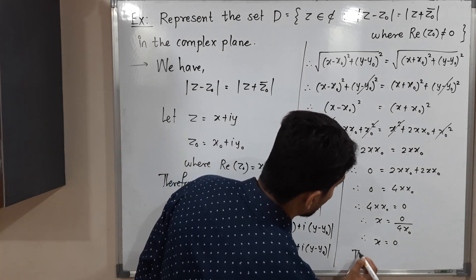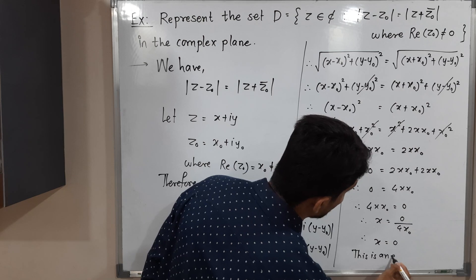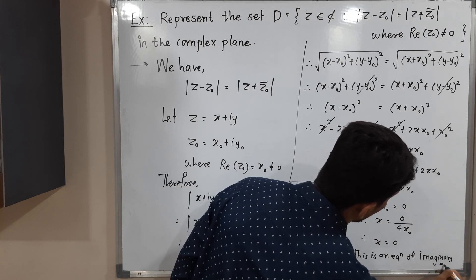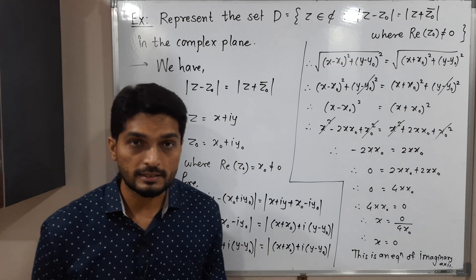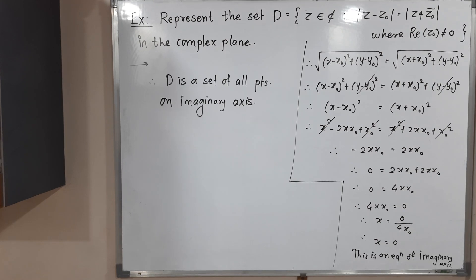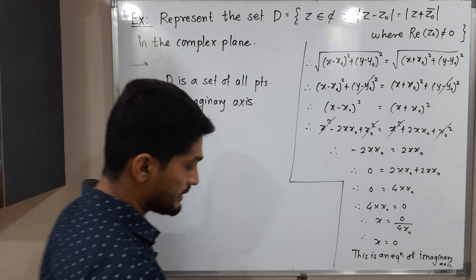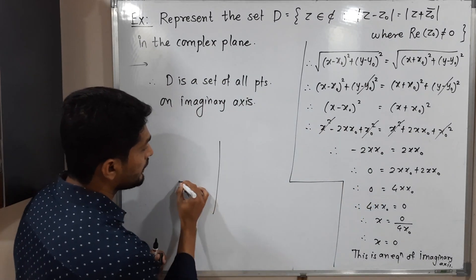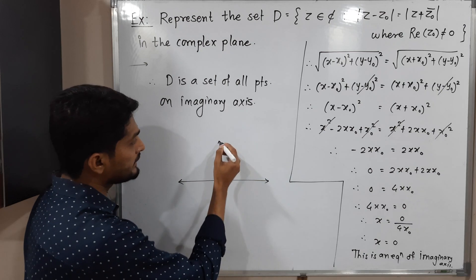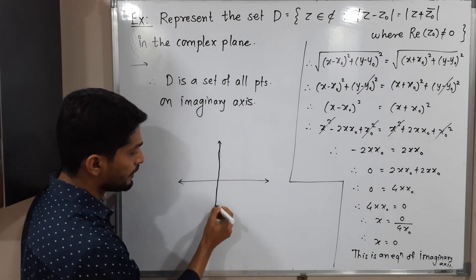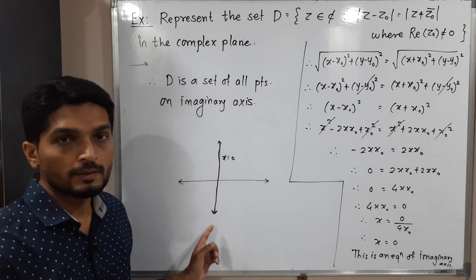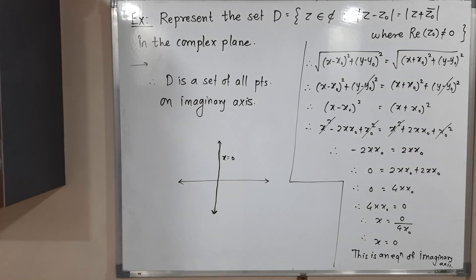X equals 0 is the equation of the imaginary axis. In the complex plane, it is better to call it the imaginary axis rather than the Y-axis. Therefore, D is the set of all points on the imaginary axis. In the complex plane, we have the real axis and the imaginary axis, and D corresponds to all points lying on the imaginary axis.